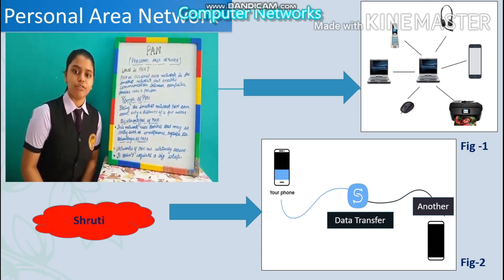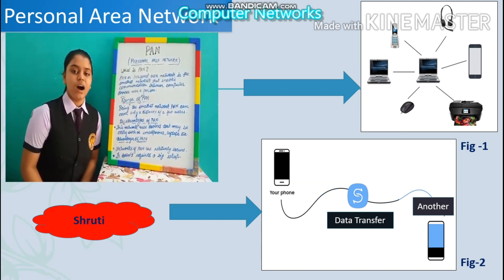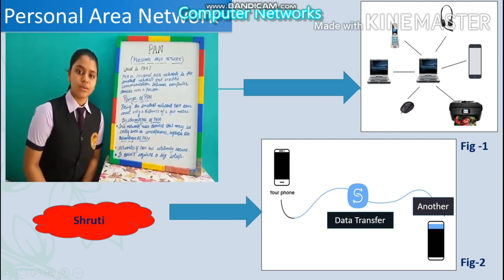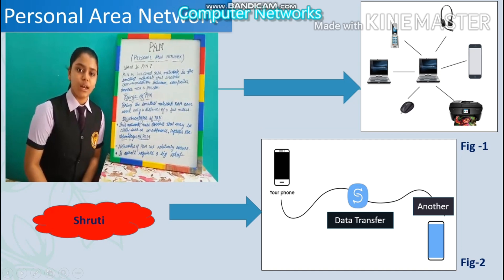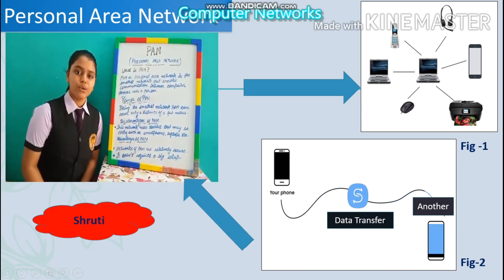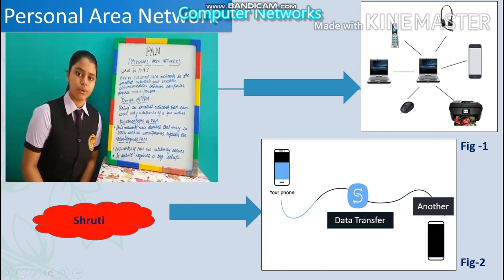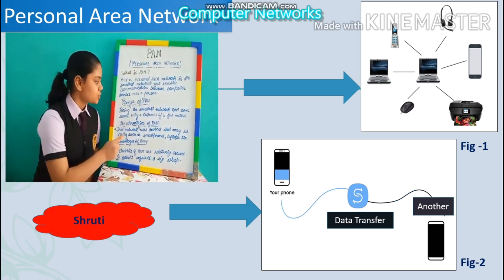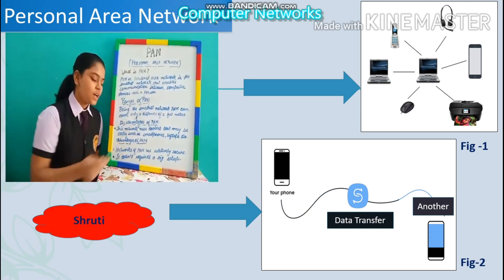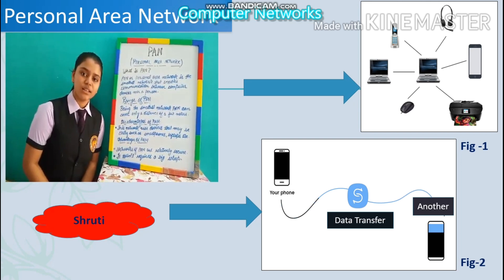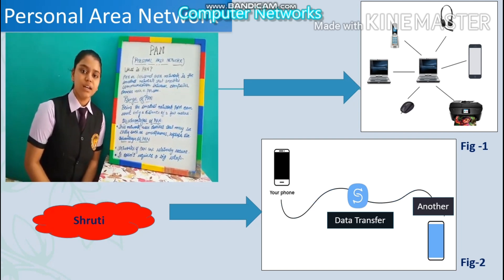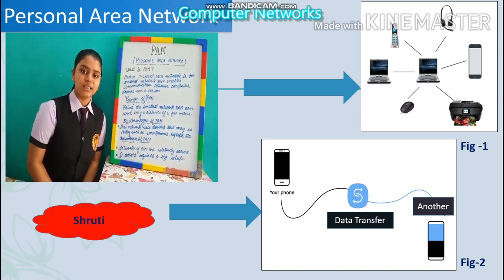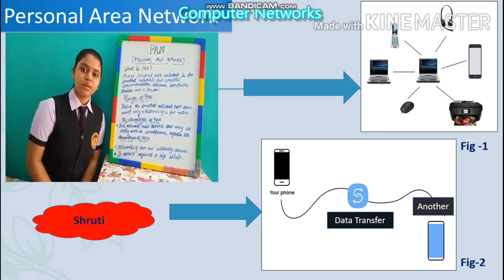Some examples of PAN are a wireless mouse connected to a laptop, or two computer components sharing data with each other using Bluetooth. Range of PAN: as it is the smallest network, it supports a distance of only a few meters, that is 10 meters.